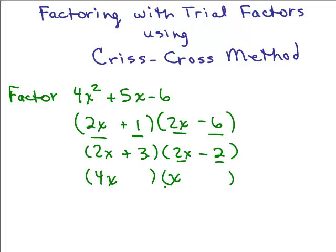I could try 4x and x and then I've got to find factors of 6. I can't put a 6 and a 1 here because there would be a 6 in the same parenthesis as a 4 — that won't work. I could try 2 and 3. I can't put a 2 in here with a 4, so I'm going to try 3 and 2. Then I have to decide where the plus and minus goes. When you do the outer and inner terms, the outer term is negative 8x and the inner term is plus 3x, and that gives you minus 5x, but the middle term is plus 5x.